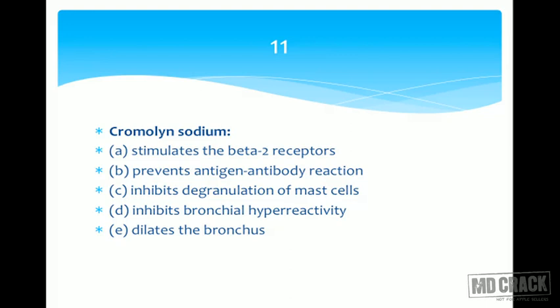D) inhibits bronchial hyper-reactivity, and E) dilates the bronchus. The mechanisms of action of various drugs used in asthma have been put as the five options, and you are asked what chromolin sodium does. Your classification of drugs should be good — remember which class this drug belongs to.